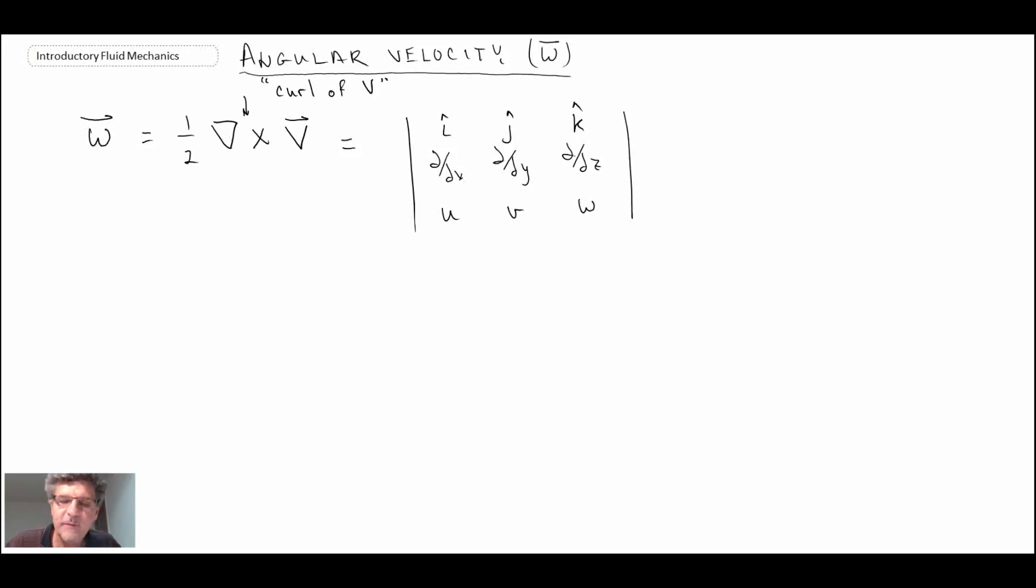That would be the way to determine the angular velocity, which again is related to vorticity in a fluid flow. If it turns out that del cross V is equal to zero, that is an indication of a flow, a special kind of flow, that we call irrotational.